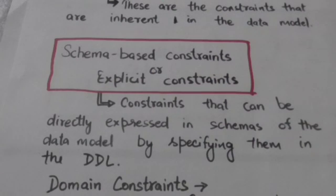For example, key constraints, domain constraints, and entity integrity constraints are constraints that can be expressed in schema of the relational model.